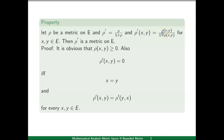Therefore the second property is also satisfied by metric rho dash on set E. The third property is to check that rho dash xy equals rho dash yx. This is also true because rho dash xy equals rho xy upon 1 plus rho xy, and when you interchange the positions of x and y there is no change in this value. That means rho xy upon 1 plus rho xy equals rho yx upon 1 plus rho yx, which equals rho dash yx. Therefore the third property is also true.